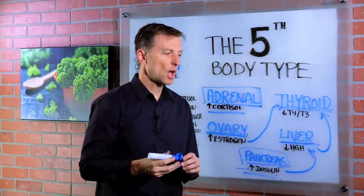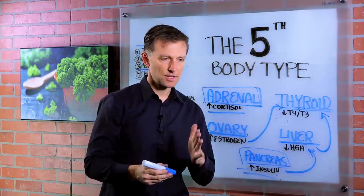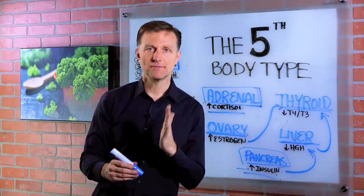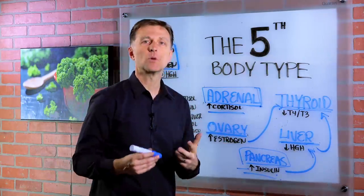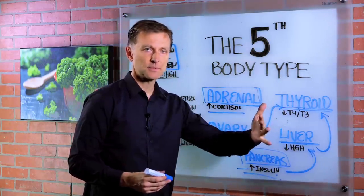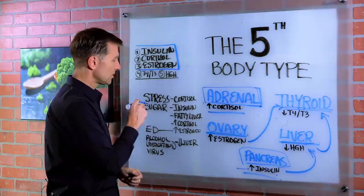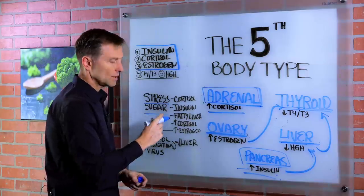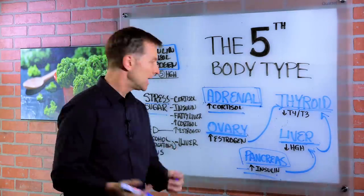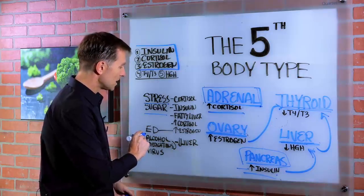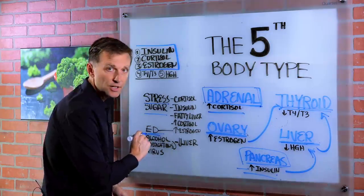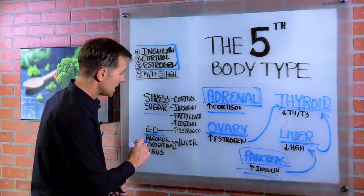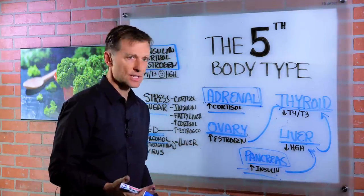The real question is: when did you start becoming this certain shape and have these certain symptoms, and what happened just before that event? That's going to tell you the trigger so you can undo it. Was it a stressful situation — a surgery, a divorce? Was it a sugar situation, in which case you're going to fix the diet? Was it some chemical environment — endocrine disruptors — where you need to start consuming a lot more cruciferous vegetables to clean that up? Or was it alcohol, in which case you have to stop drinking alcohol.